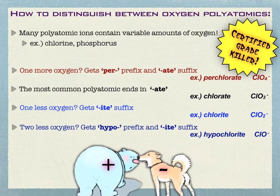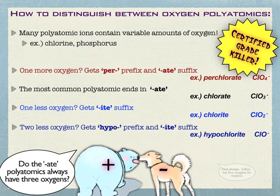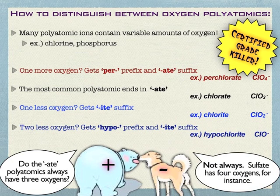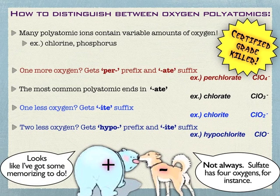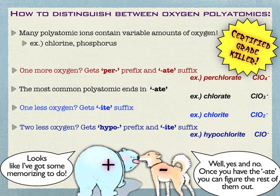You really do have to memorize this — there's no way around it. Take the time to know per-ate, -ate, -ite, hypo-ite. It's really not that hard to memorize, and then you can scale up and down, which means there's even less to memorize overall. Remember that not all -ates have three oxygens. There are patterns on the periodic table you can use, or you can just memorize which ones are three and which ones are four — you decide how you want to spend your time. Once you know one of them, you can scale up and down from there.